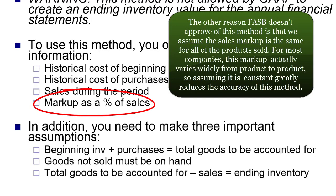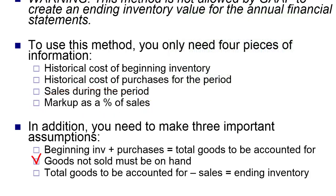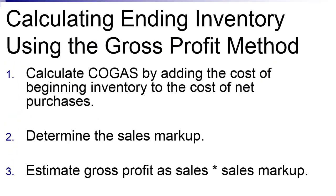There are a lot of different markups that companies use. For example, in the food industry, drinks are typically marked up close to 100%, while the food itself is much lower than that. The assumption of a constant markup and the assumption that anything not on hand was sold are the two reasons why FASB doesn't really care for this method. But we can still use it in many situations, so we need to know how. Here are our steps.